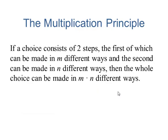If a choice consists of two steps, the first of which can be made in m different ways, and the second can be made in n different ways, then the whole choice can be made by multiplying m times n.